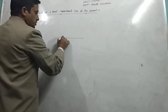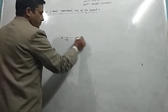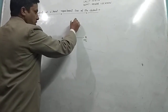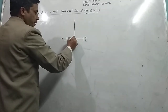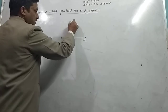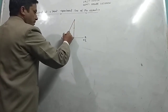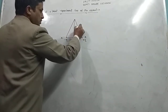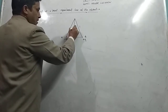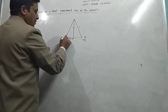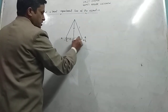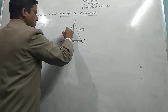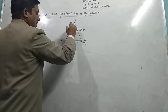Electric dipole — charges minus Q and plus Q. The equatorial line is perpendicular. This line is R, and this distance is L. The IIT point P is at a distance root of R square plus L square.